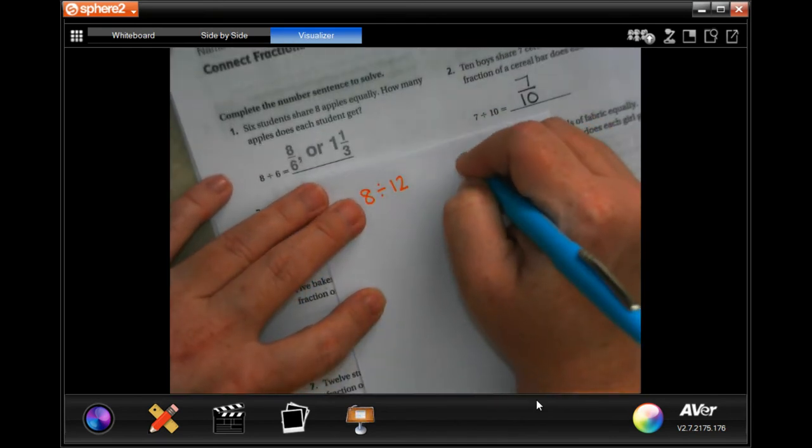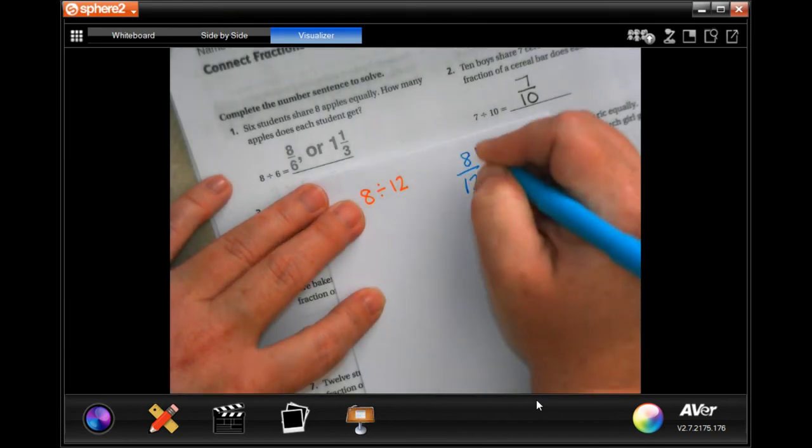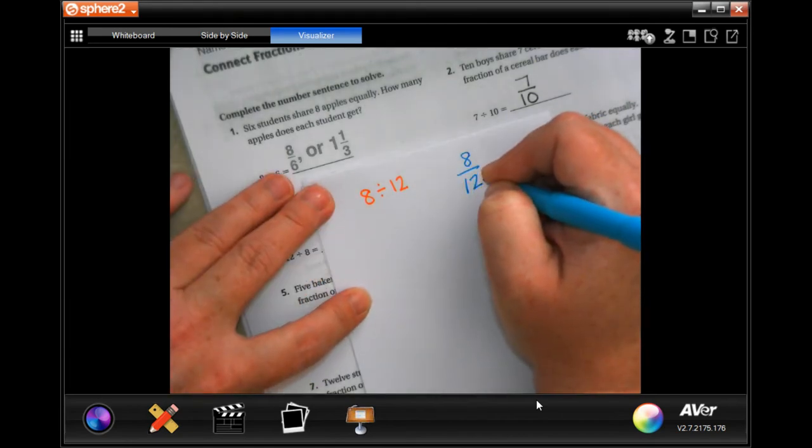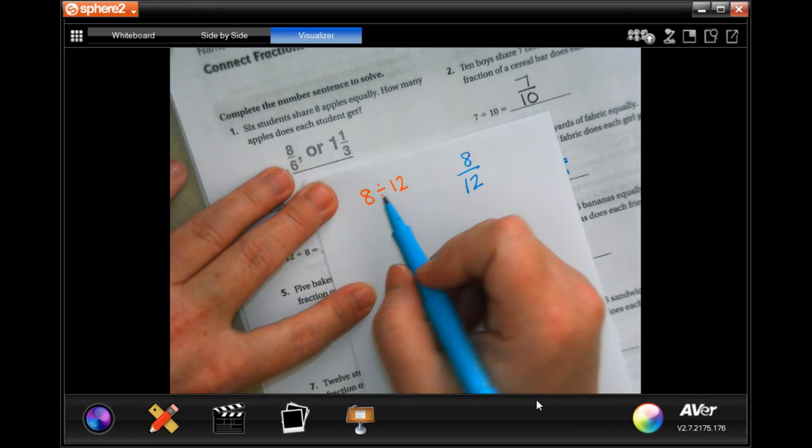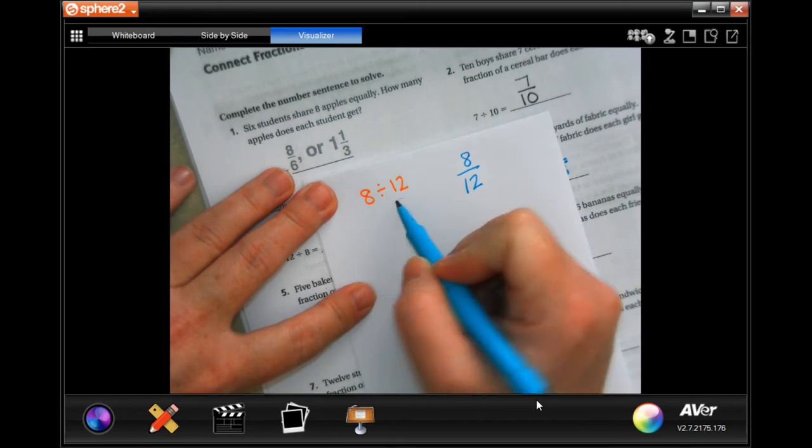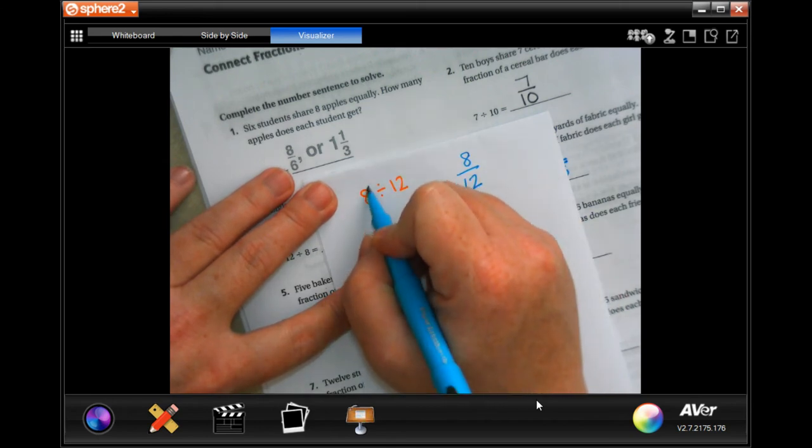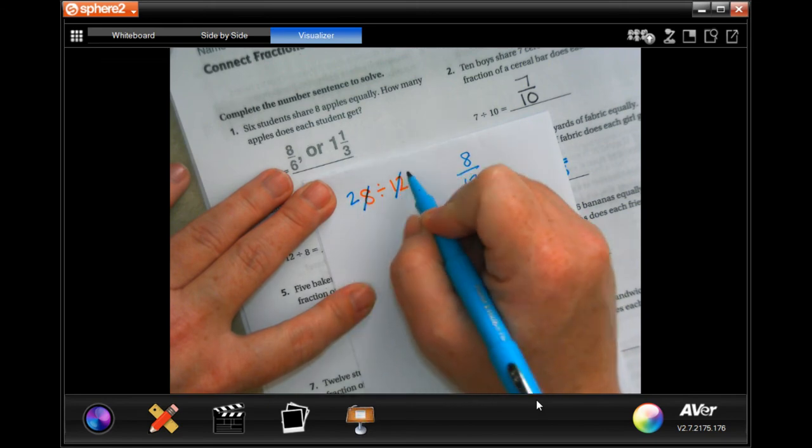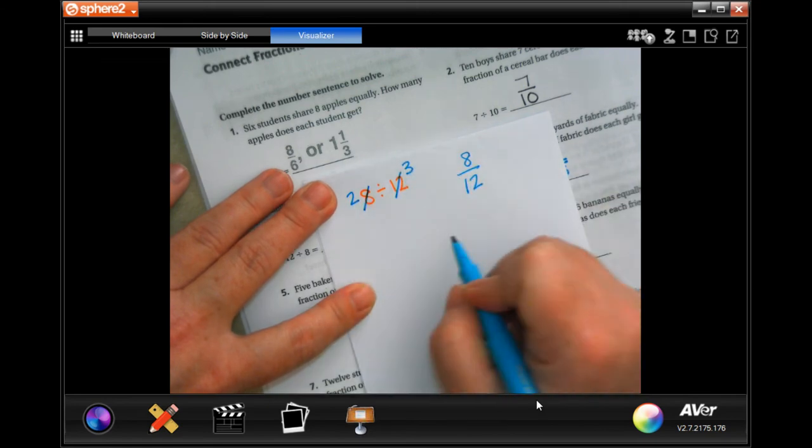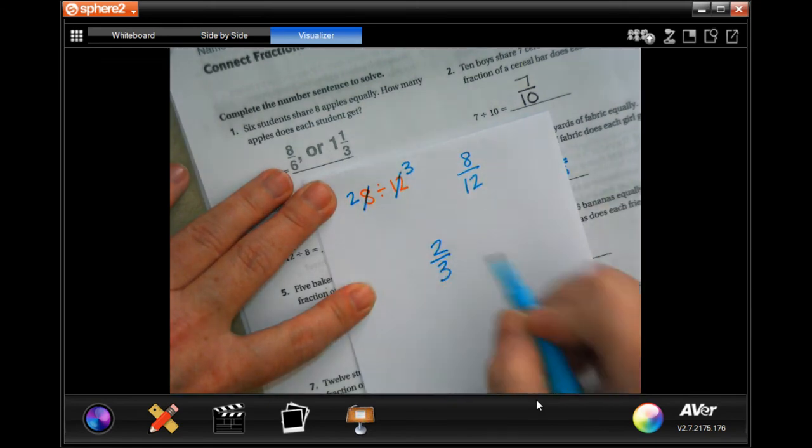Now I can rewrite that as eight over twelve and then I can reduce it. Or I can sit here when it's like this and I can go 'four goes into eight twice and four goes into twelve three times,' which makes it two thirds.